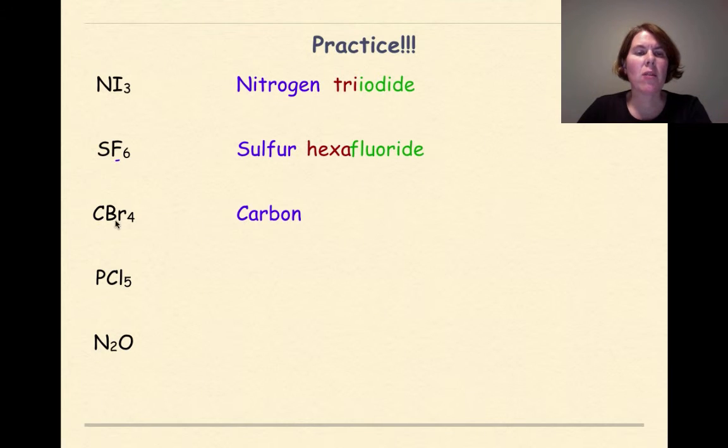The next one is carbon, then the four is represented by tetra, and the bromine we're going to change to bromide. So this is carbon tetrabromide.